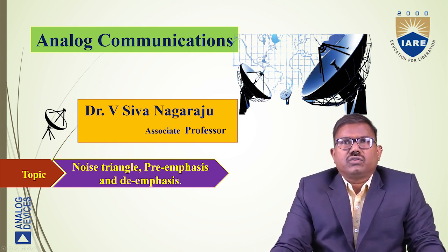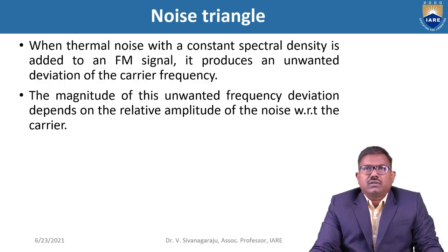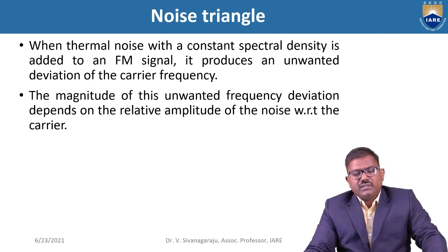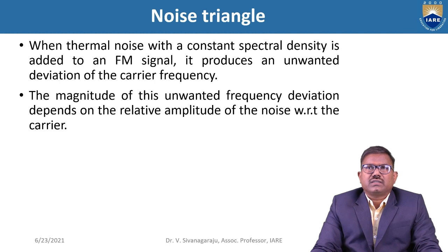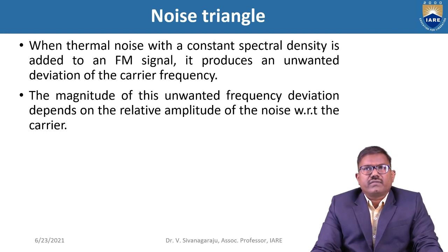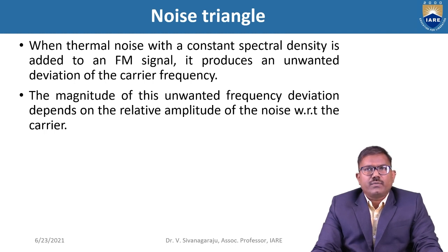First, the noise triangle and how the noise is going to add to the signal. When thermal noise with a constant spectral density is added to an FM signal, it produces an unwanted deviation of the carrier frequency. The magnitude of this unwanted frequency deviation depends on the relative amplitude of the noise with respect to the carrier.